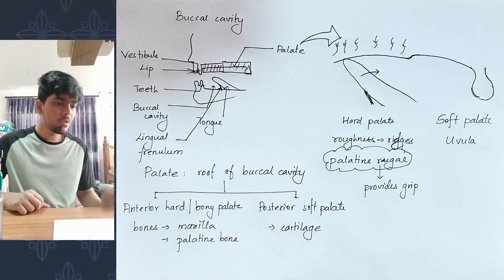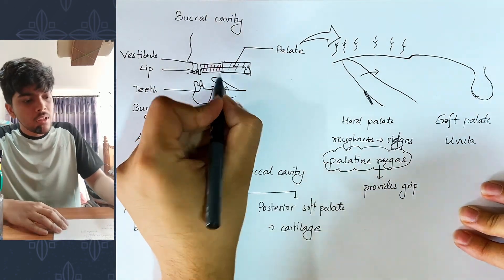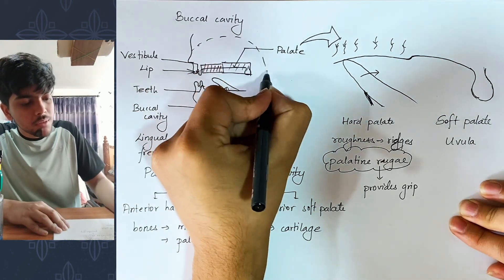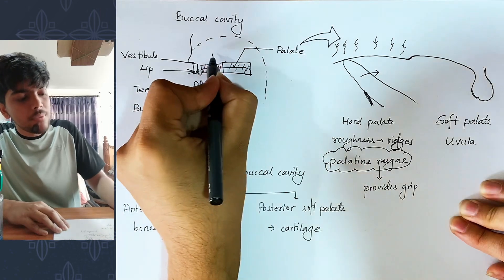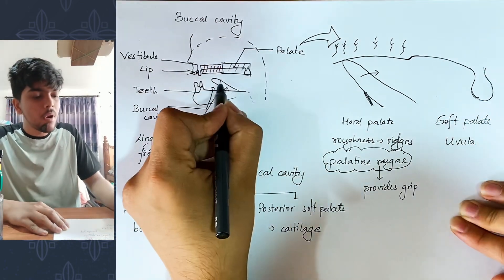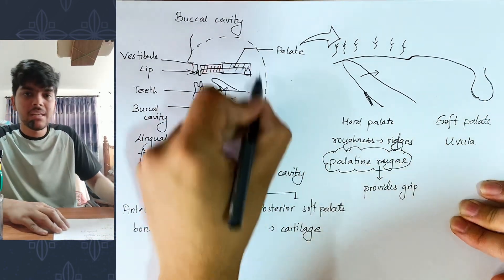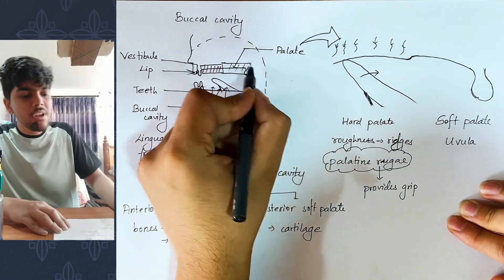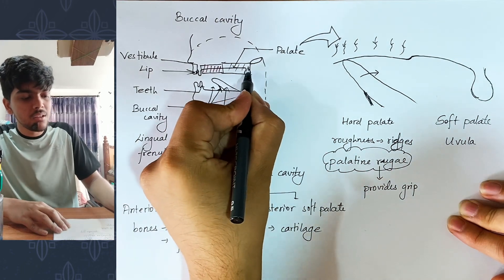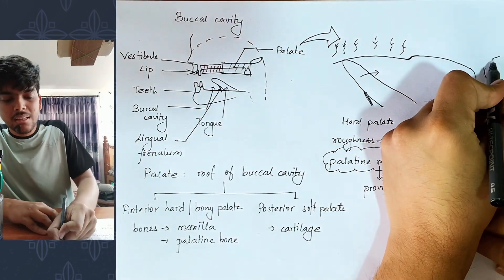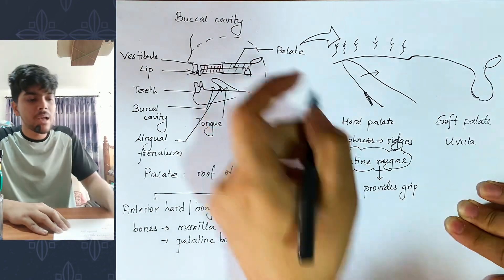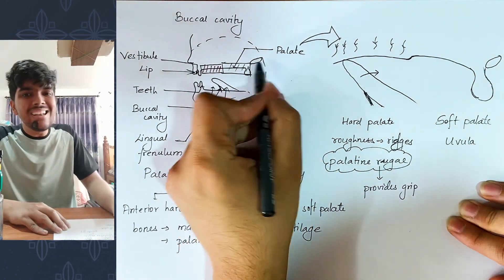Now let us understand the function of the uvula. Above the buccal cavity there is another cavity — the nasal cavity, located at the back behind the nose. The nasal cavity and buccal cavity meet at a place called the pharynx. At the internal nares (internal nostrils opening), the uvula is present.